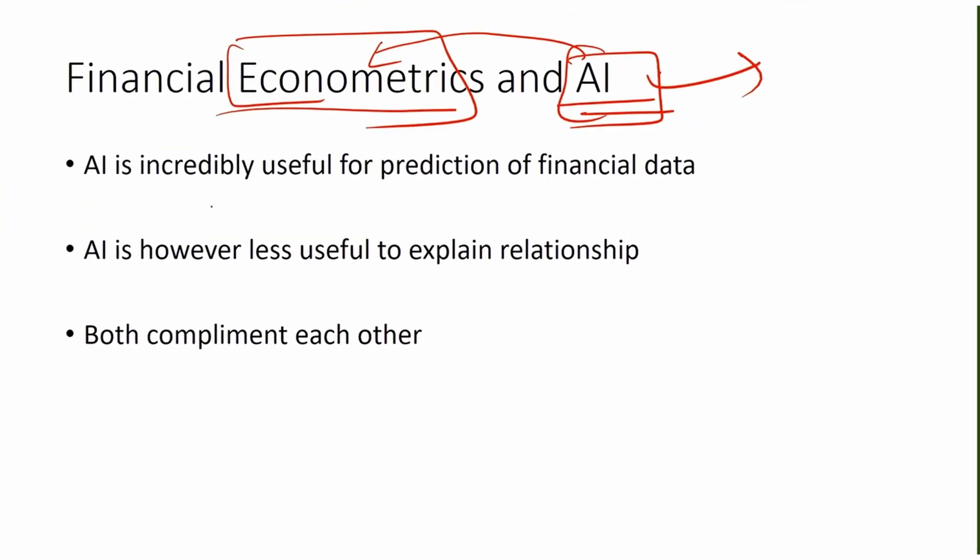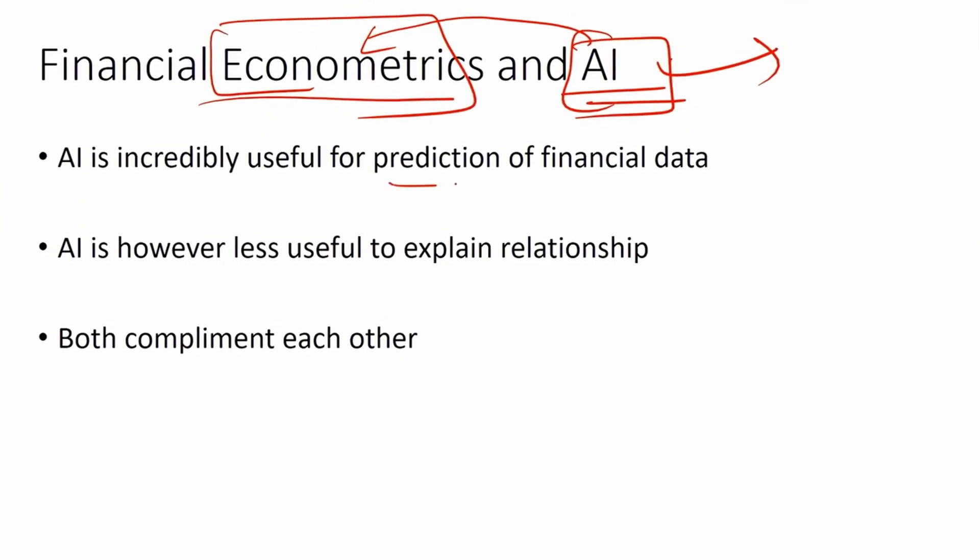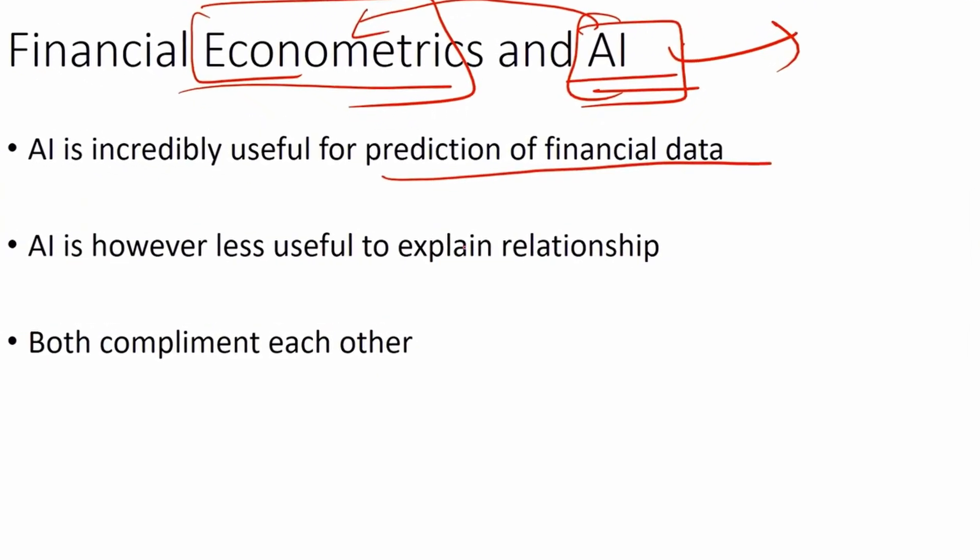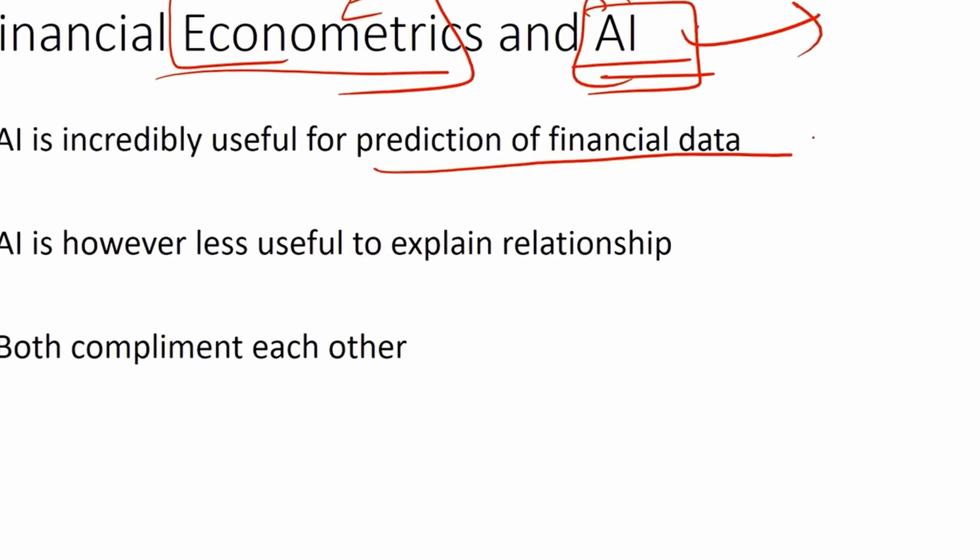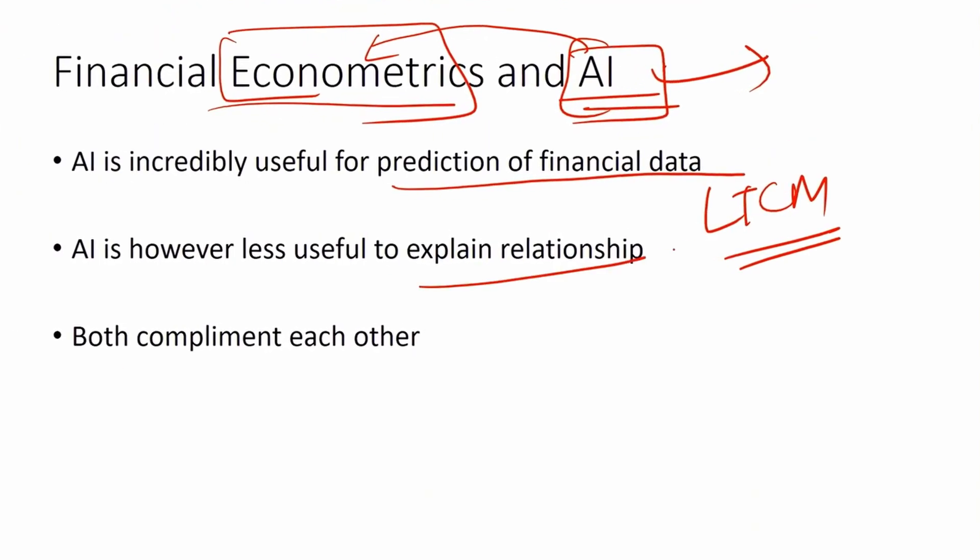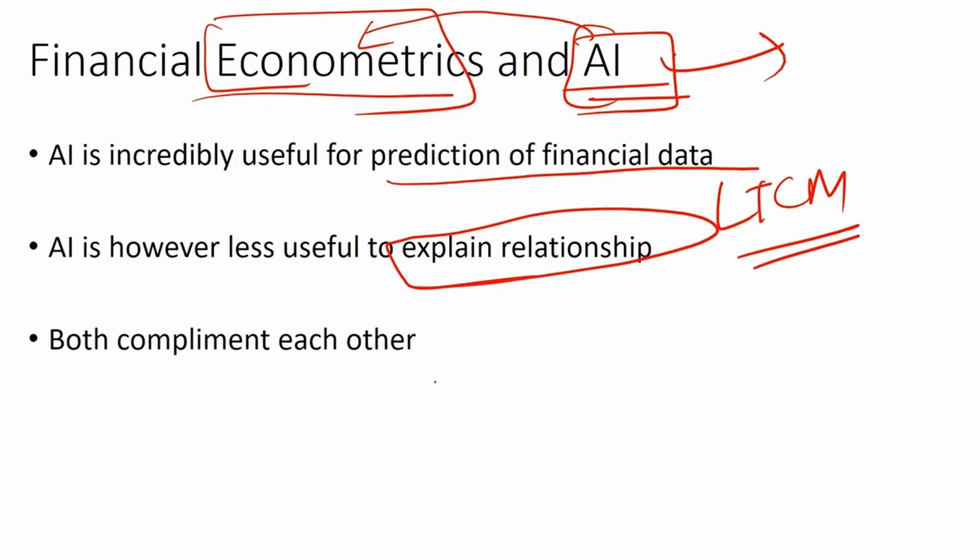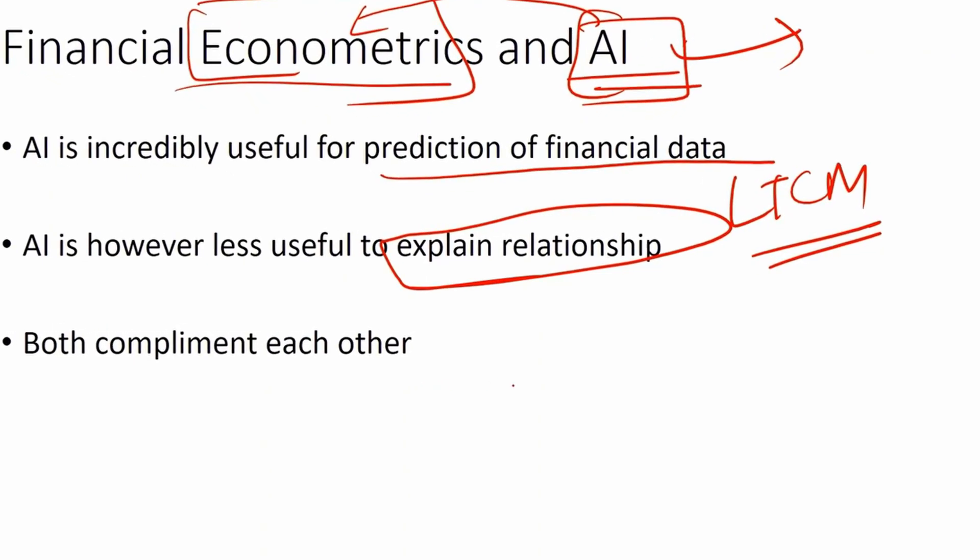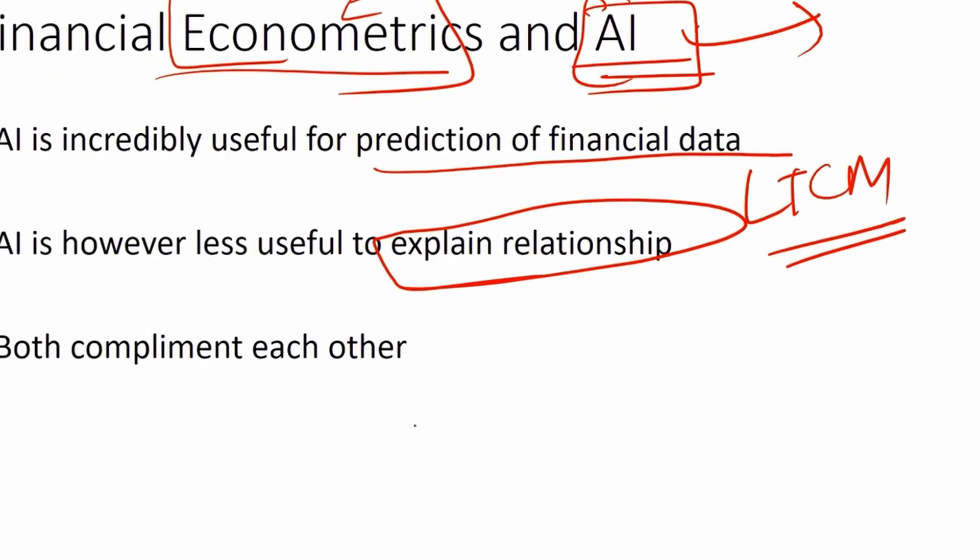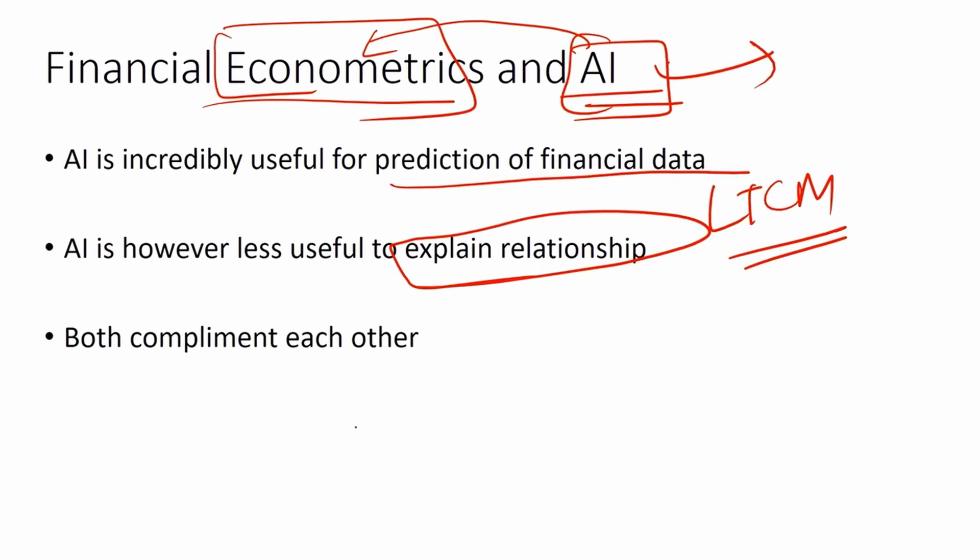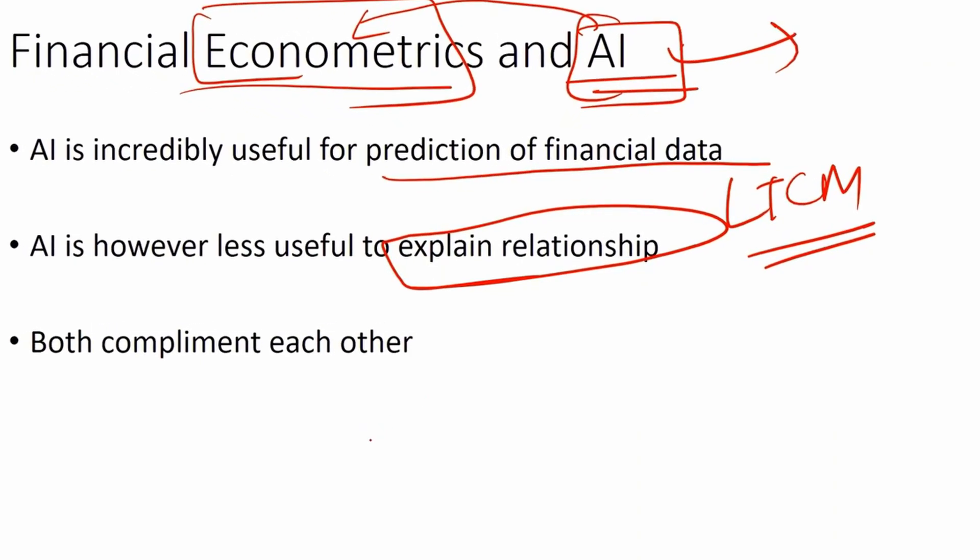AI is incredibly useful for predicting financial data, therefore you use lots of AI techniques these days. However, it is less useful to explain relationships. In the field of finance, you need to be able to explain the relationship between different variables. One example could be finding out the relationship between inflation and interest rate. That kind of problem you cannot solve through AI.